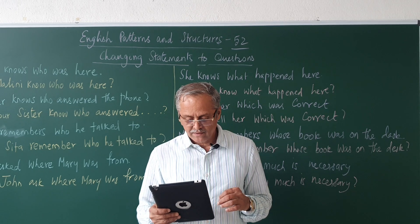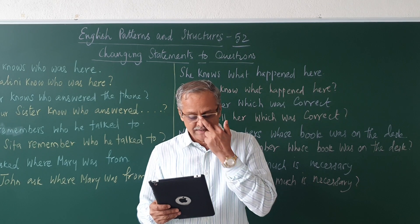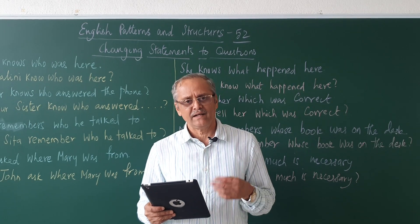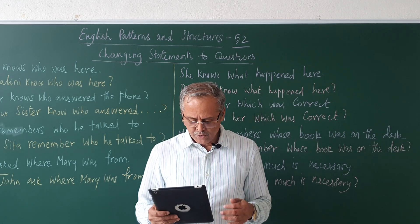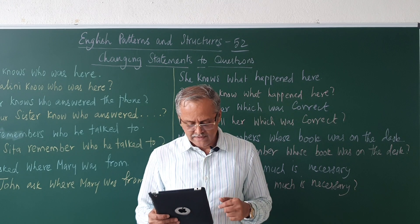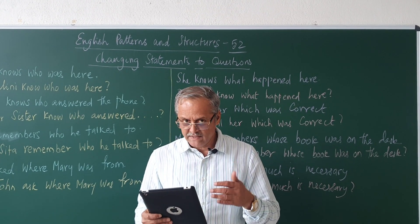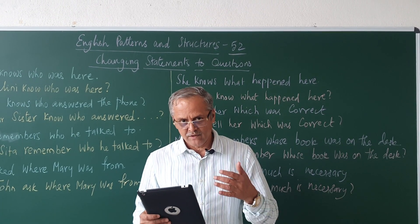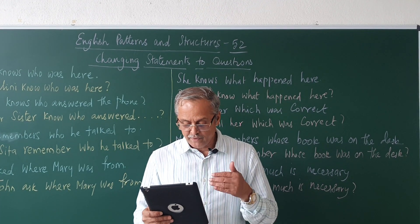John explained where Boston is. Did John explain where Boston is? He can understand why Mary wants to go there. Can he understand why Mary wants to go there? Mary would like to know how far it is. Does Mary like to know how far it is? Malini learnt how often John practises English. Did Malini learn how often John practises English?